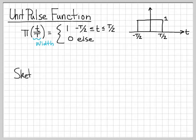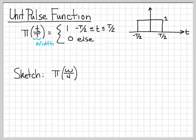It's the denominator of the pulse function that tells us the total width. In this case the denominator is capital T, so the unit pulse as sketched here should have a total width of T. It goes from −T/2 to T/2 — a half plus a half equals 1 — so a total width of T.